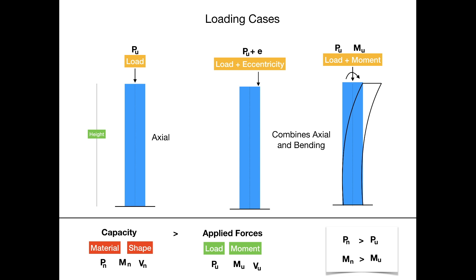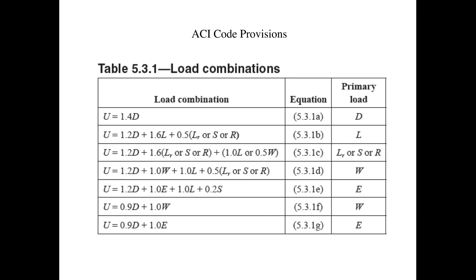In the design phase, what we usually do is make sure that the capacity of any structural member is greater than the applied forces. In the case of axial loading, our nominal load P_N — the capacity of the column — should be greater than P_U, the applied load. In the case of combined axial and bending, we also have to make sure that the moment capacity M_N is greater than the applied moment M_U. Applied forces are calculated from analysis software like ETABS and SAP, whereas the capacity of a structural member depends on the shape, material, and reinforcement provided.